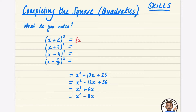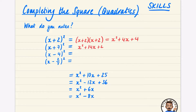As a quick reminder, x plus 2 squared is just x plus 2 multiplied by x plus 2. When you've expanded these brackets, the first one should give x squared plus 4x plus 4, the second x squared plus 14x plus 49, the third x squared minus 8x plus 16, and the fourth x squared minus 4 over 5x plus 4 over 25 — that one is trickier because of the fractions.